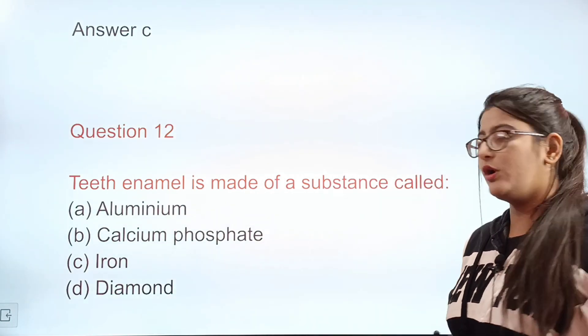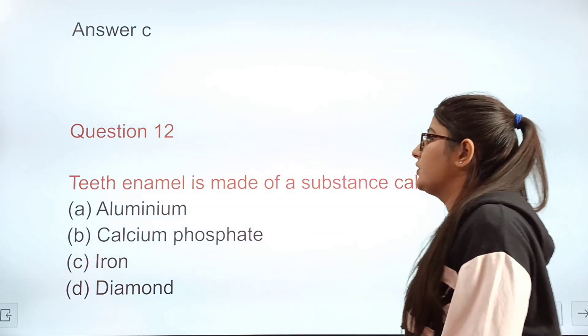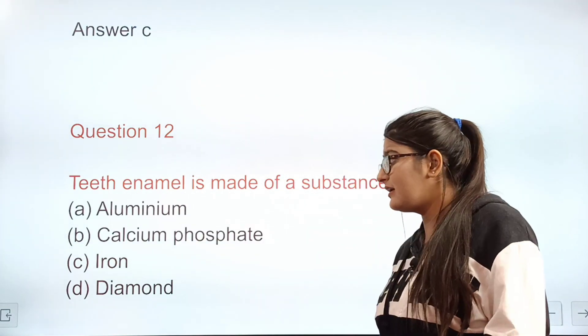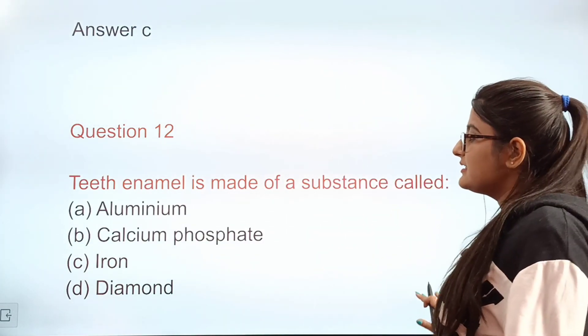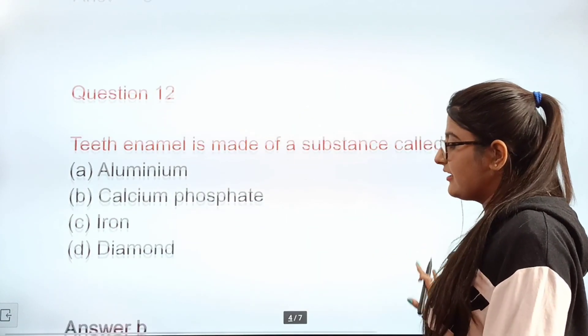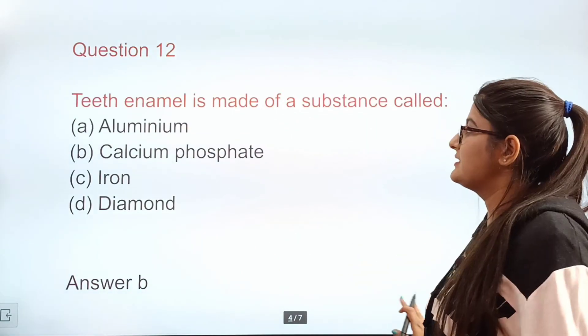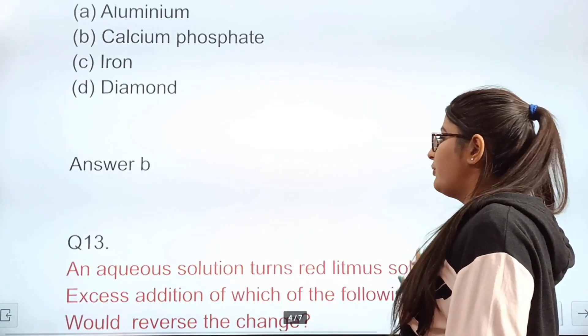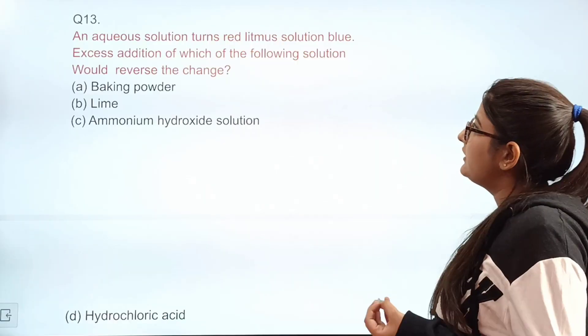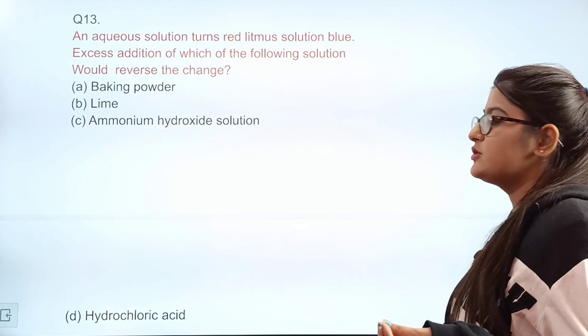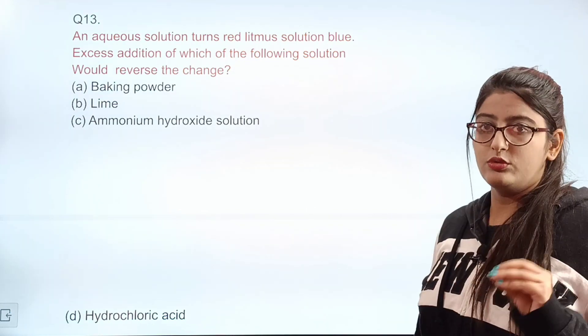Question 12: Teeth enamel is made up of a substance called dash. Options: aluminium, calcium phosphate, iron, diamond. Correct answer: B — calcium phosphate.